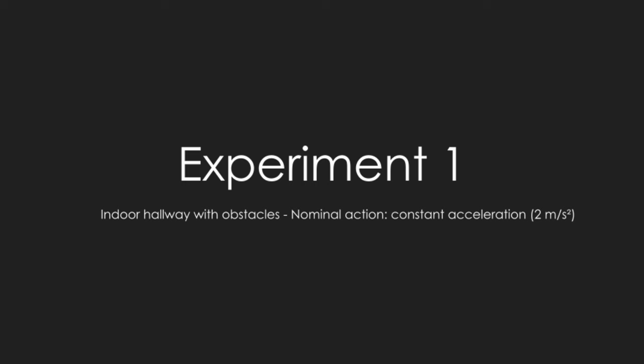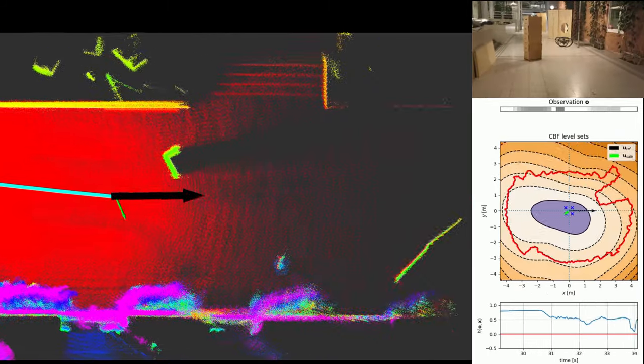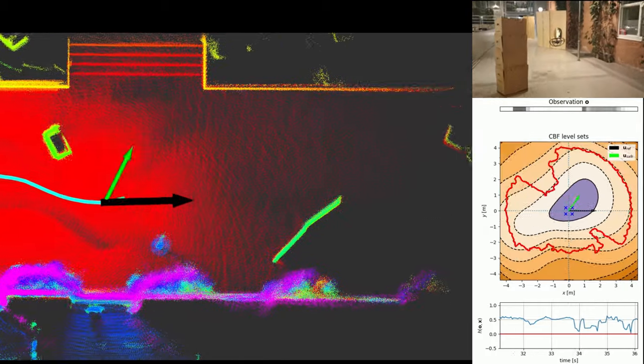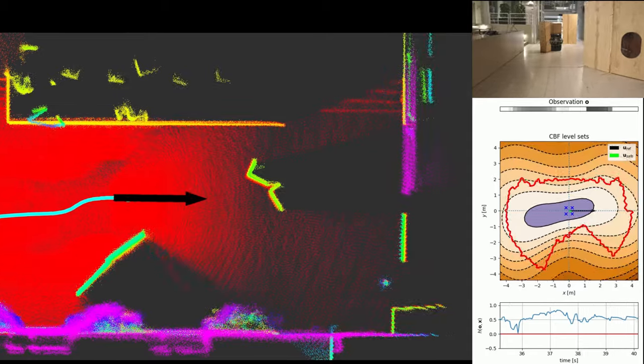In the first experiment, the robot receives a constant acceleration reference of 2 meters per second squared. The safety filter employs the control barrier function to produce a safe acceleration shown in green from the nominal unsafe acceleration shown in black.